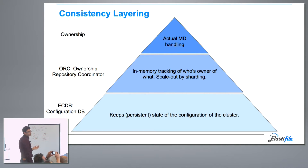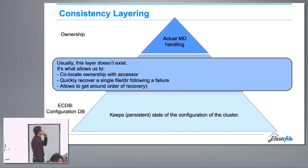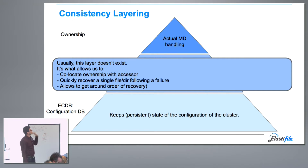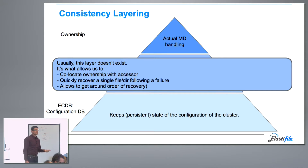The third layer is the ownership layer, which does the actual metadata handling. The middle ORC layer is the layer that you usually don't have — that's the layer we add. And that's the layer that allows us to do collocation with the accessor, moving things around.